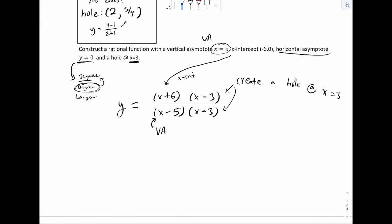So some people want to do this and put an x at the bottom because that would create your HA at y equals 0. But you don't want to do that because it doesn't say there's a VA at 0. This would create an excessive vertical asymptote. So the easiest way to increase the degree is to put a 2 right there. And now everything is satisfied. There's a VA x equals 5, x int at negative 6, HA equals 0, and the hole because this would cross out. And there's our completed function.